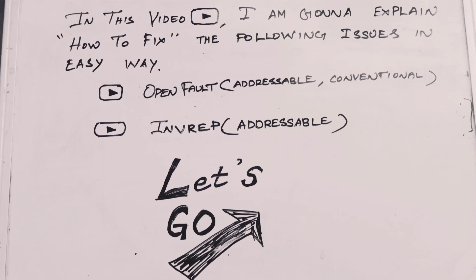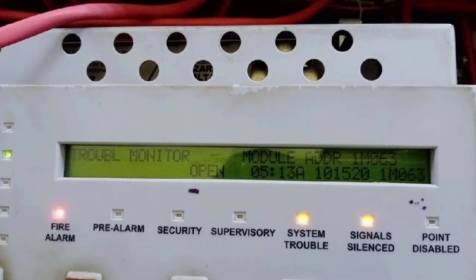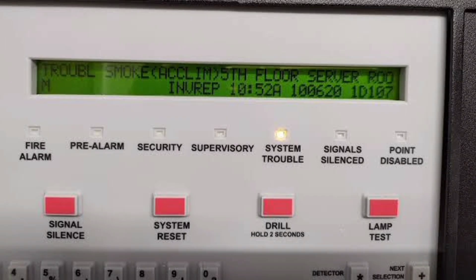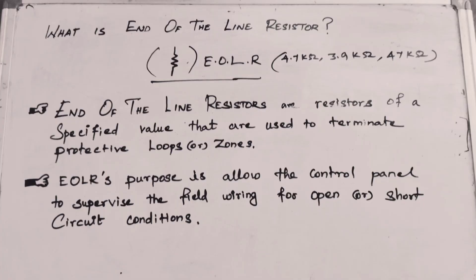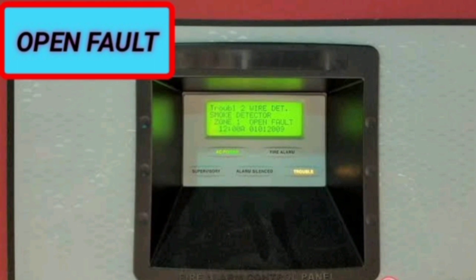I'm using my experience with Notifier FireLight pattern system and mediate panels for solving the open fault and invalid response. Before we get the solution for open fault, we need to understand the basics of the end-of-line resistor. It allows the panel to supervise the field wiring for open and short-circuit conditions. I am dividing this open trouble into conventional and addressable respectively.